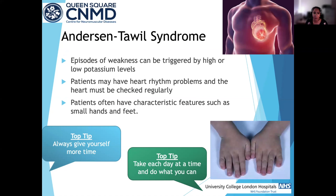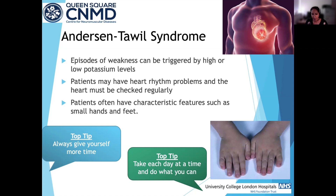Andersen-Tawil syndrome is slightly different in that it doesn't just affect the muscles. Patients have episodes of weakness that can be triggered by either high or low potassium levels, so we aim to keep potassium levels as even as possible. Patients can also have heart rhythm problems, so it's really important to see a cardiologist every year. Patients may have specific features such as smaller hands and feet or be a little shorter. Top tips: give yourself a little more time when doing things, pace yourself through the day.